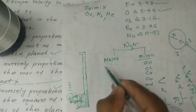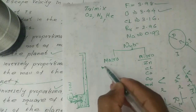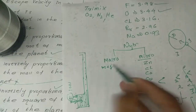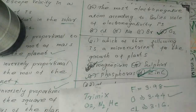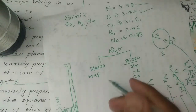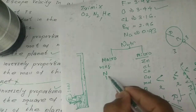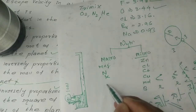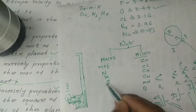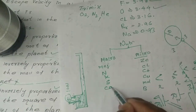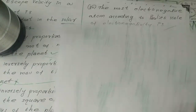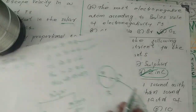Macronutrients include nitrogen, phosphorus, sulfur, and calcium. Micronutrients are the other category.